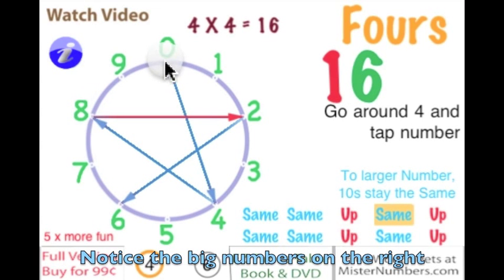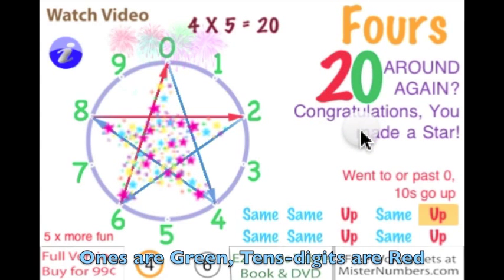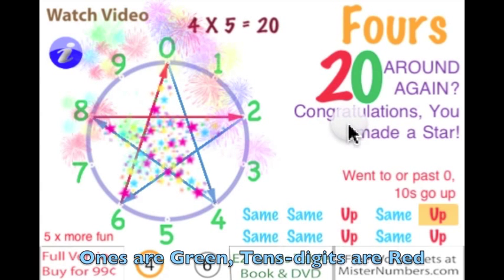Go around 4 more to 6 and go around to 0, and 4, 8, 2, 6, 0 has created a star. Isn't that cool?